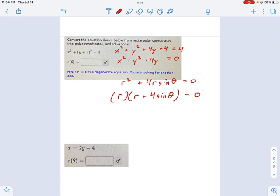That's our GCF. So we have r, and we have r plus 4 sine theta equals 0. And what do we do when we're factoring? We set each parentheses equal to 0. Now you'll see here, it says hint, r equals 0 is a degenerate equation. This is what we're talking about. We don't worry about r equals 0. That's nope. That's the equivalent of DNE. It's just a point at the origin. It doesn't really mean very much, and it's degenerate. So we're going to ignore that one.